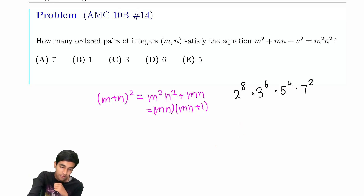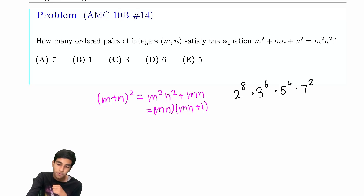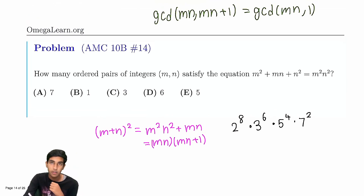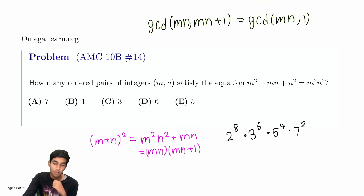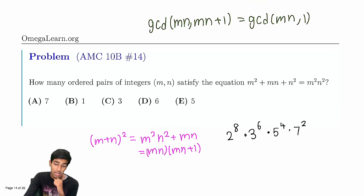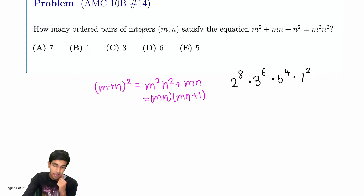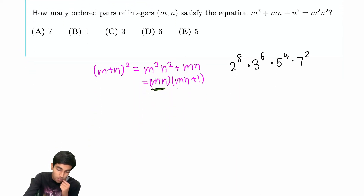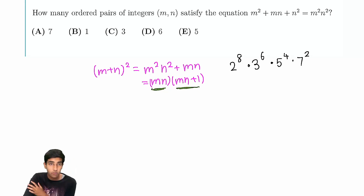If you don't immediately see why, we can use the Euclidean algorithm to prove this. GCD(mn, mn+1) — we subtract mn from mn+1 and get GCD(mn, 1), which is clearly 1. So these two terms are relatively prime; they don't share any factors.